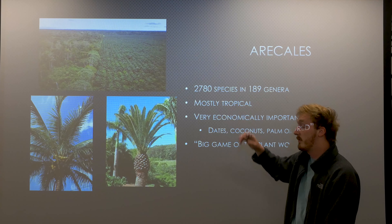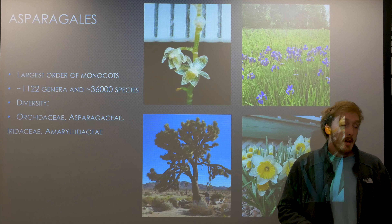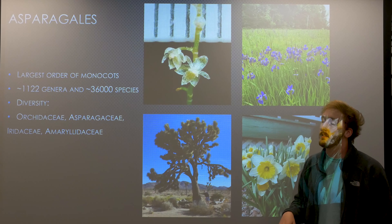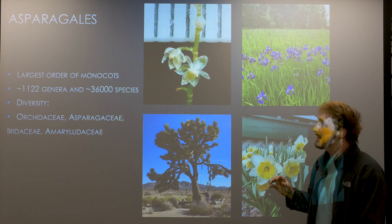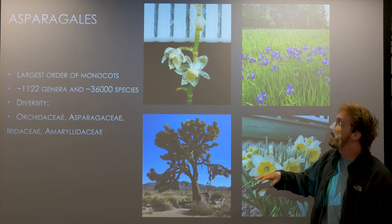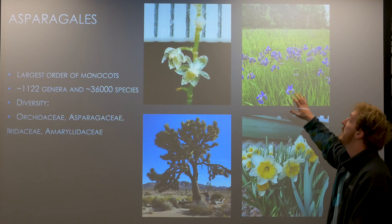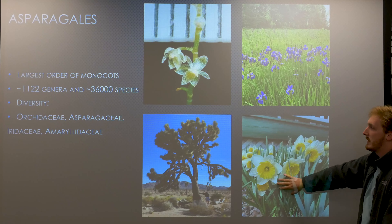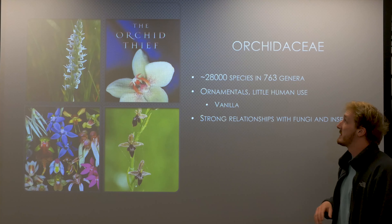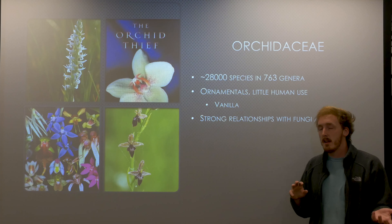Now we'll talk about the major orders and their relationship to each other. We're only going to cover four of them — the most important and useful to humans. The first order is the Arecales, or the palms: about 2,700 species, mostly tropical. This is where we get palm oil, coconuts, and date palms. They've been called the big game of the plant world. On the left is the Amazon rainforest, on the right is a palm oil farm — I think you should definitely look into the issues with the palm oil industry.